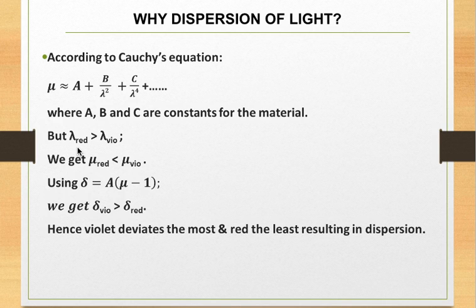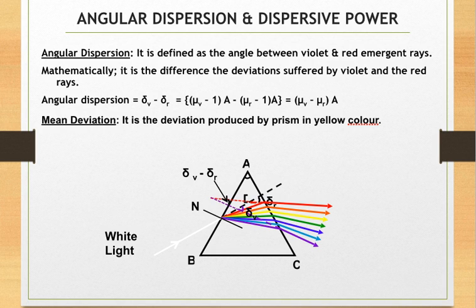We have lambda red, that is wavelength of red, larger than wavelength of violet. So by Cauchy's equation, the refractive index for red color will be less than refractive index for violet color. Also, deviation delta equals A into mu minus 1, which implies larger mu, larger delta. Therefore, violet deviates more than red. So violet goes closest to the base and red remains farthest from the base, resulting in the dispersion. Violet deviates the most and red the least, resulting in dispersion.